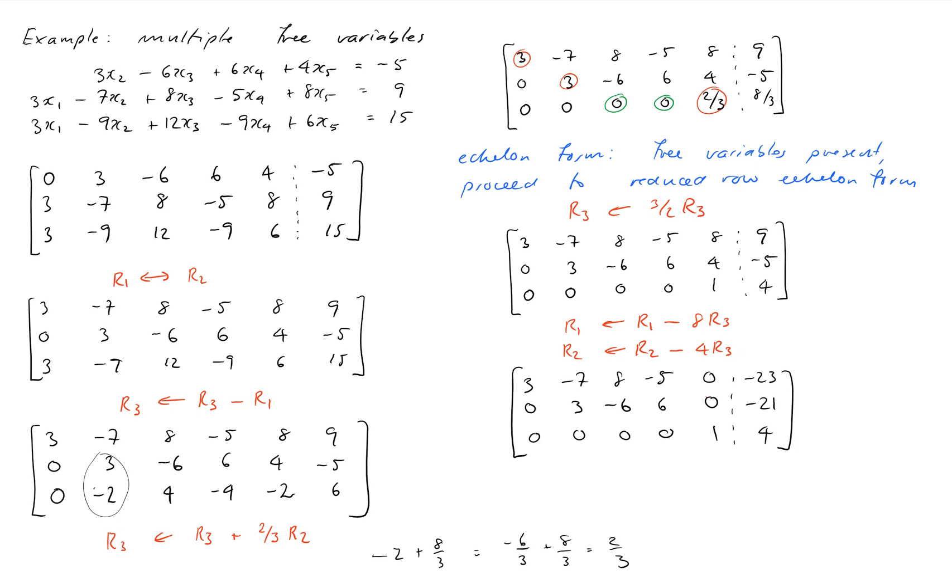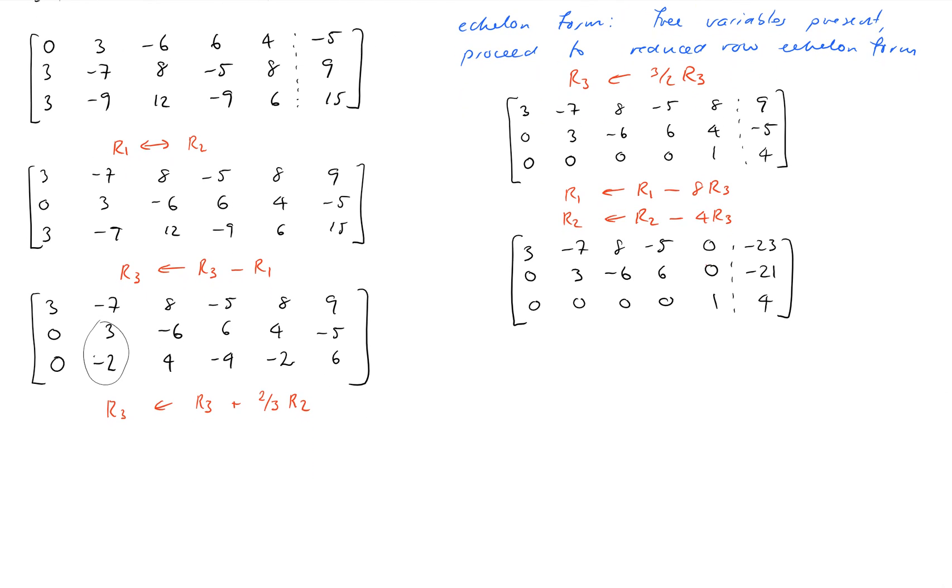Okay, almost there. So the next thing I have to do is to turn my pivot in the next row up into a one. Okay, so notice the pivot at the moment is equal to a three. So I'm going to do the row operation row two becomes one third row two. So row one stays the same: 3, negative 7, 8, negative 5, 0, negative 23. Row two: 0, 1, just dividing everything by three, negative 2, 2, 0, negative 7. And of course, the bottom row we won't touch that again.